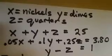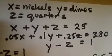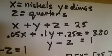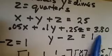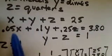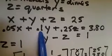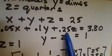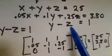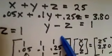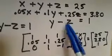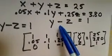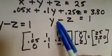We have three variables to define: x for nickels, y for dimes, and z for quarters. The total number of coins is 25, so x plus y plus z equals 25. Since we have a value of $3.80, we include the coin values: 0.05x plus 0.1y plus 0.25z equals 3.80. Finally, since you have one more dime than quarter, y minus z equals 1. Notice there is no x in that equation, so our coefficient matrix will have a zero there.